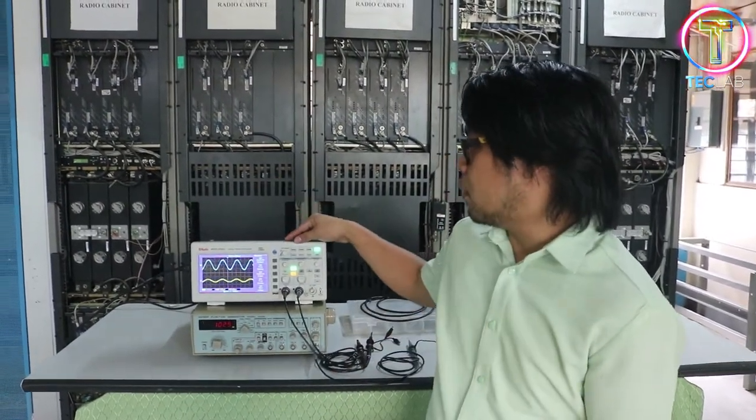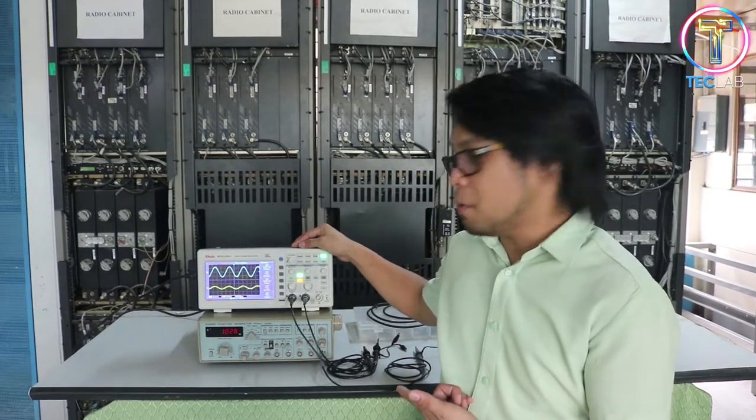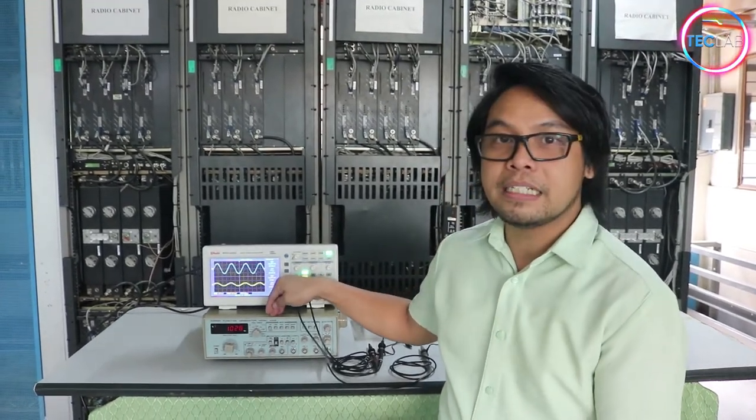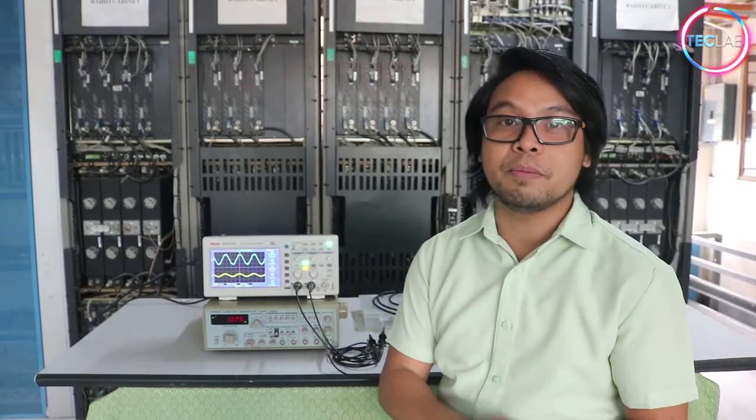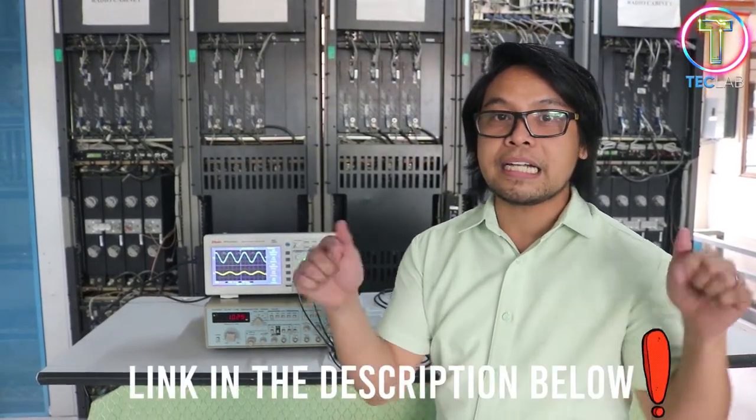For the first process of our laboratory, we need to set up or calibrate our Wheeler oscilloscope and set up the signal generator. In order for you to know how to set up and calibrate our oscilloscope, please click the link below.